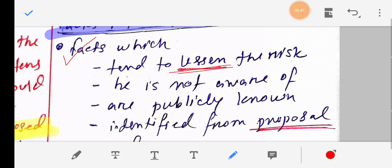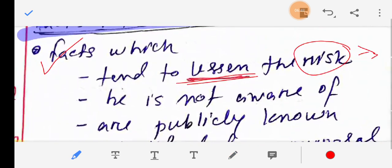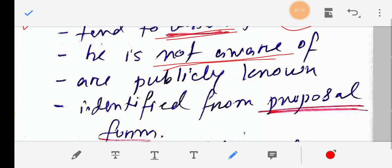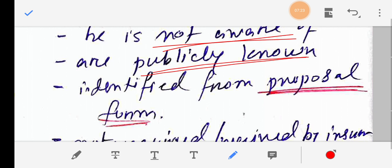There is a class of facts not required to be disclosed. Facts which tend to lessen the risk do not need to be disclosed. Risks are important because risk determines premium. Facts which are not aware of - if the insured is not aware, they need not disclose. Then publicly known facts. Public facts are already known to the public in general, so they need not be specifically disclosed.